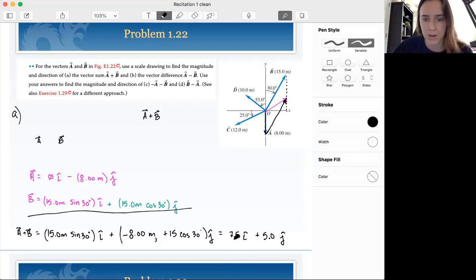So our i component, our x component, our i hat is 7.5 and we go up 5. So this would be the unit vector notation of that resulting vector.